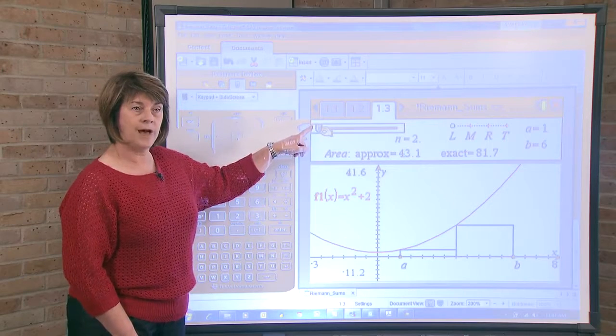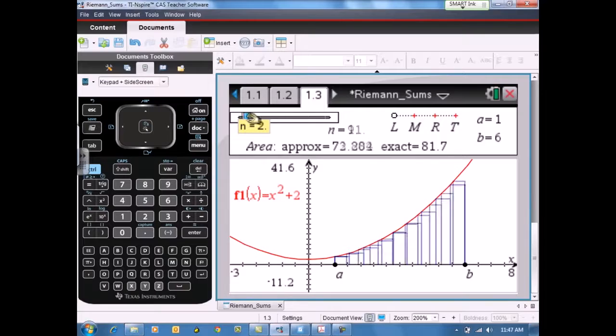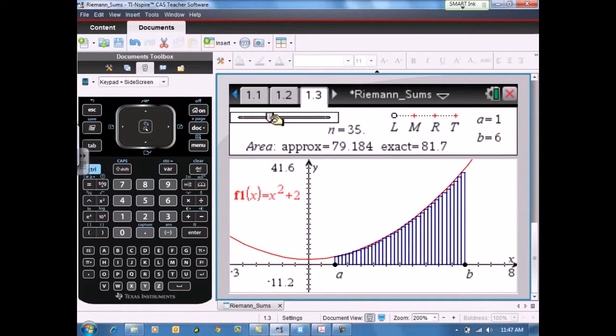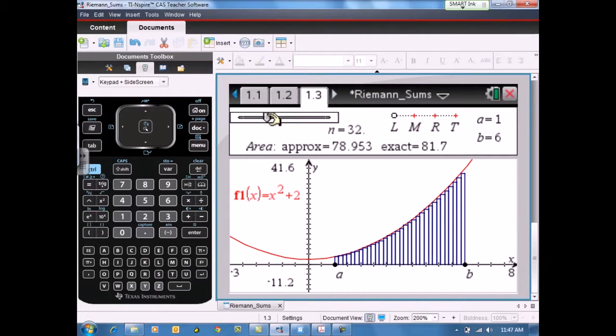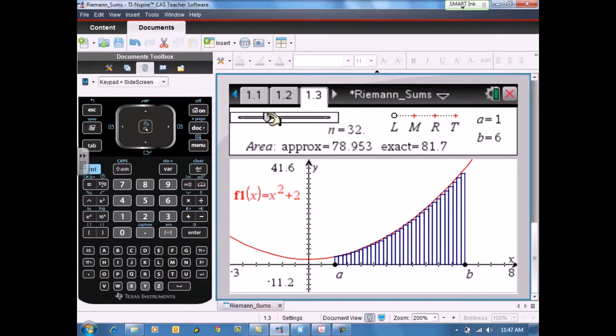As the students complete the table by increasing the number of rectangles, or the value of N, they should see that the area approximation is getting closer to the exact area under the curve. There are some wonderful guiding questions on the student document that ask them to explain what they see as the rectangles increase from N equals 2 to N equals 32.